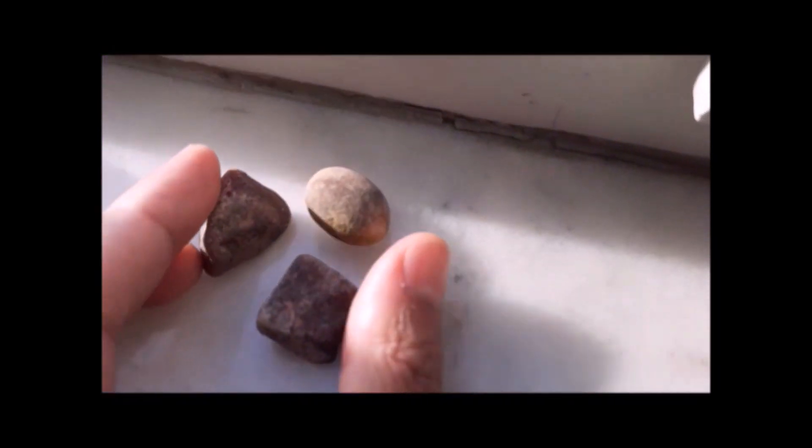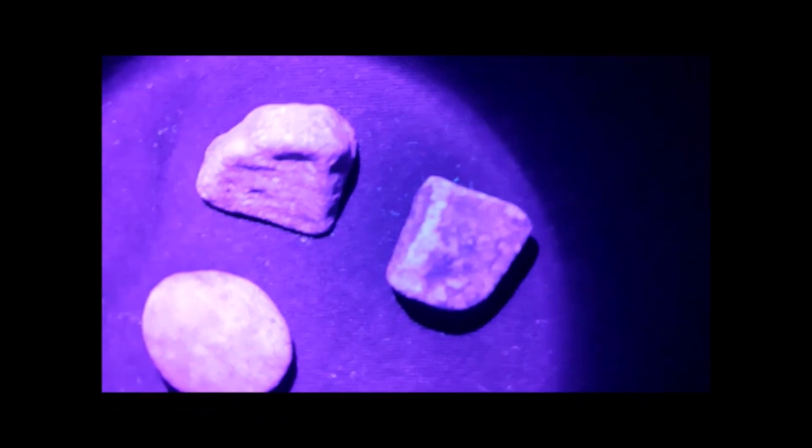However, it is important to remember that just because a stone fluoresces under UV light, it does not necessarily mean that it is a natural ruby. Proper evaluation of a ruby stone requires a combination of different methods, including visual inspection, ultraviolet light testing, and expert analysis by a gemologist.